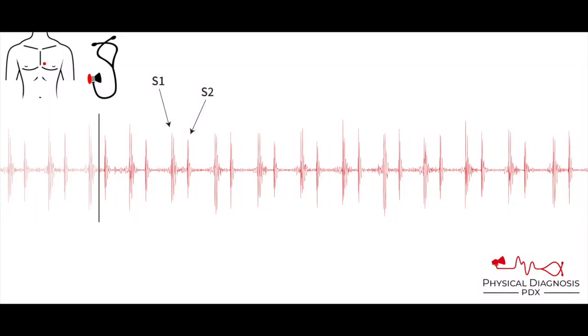Let's jump right into heart murmurs and begin with what a normal heart sounds like. A normal heart usually has only two sounds: S1 and S2 — the famous lub-dub. The interval between S1 and S2 is systole, when the ventricles are contracting, and this tends to be the shortest interval. Everything outside the lub-dub is diastole, when the ventricles are filling.